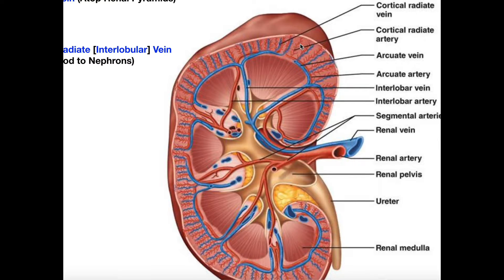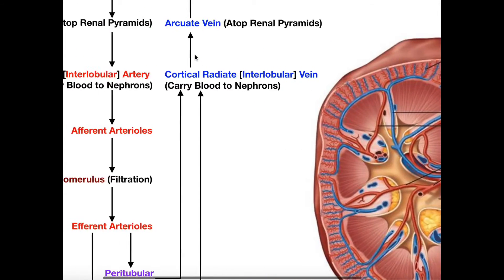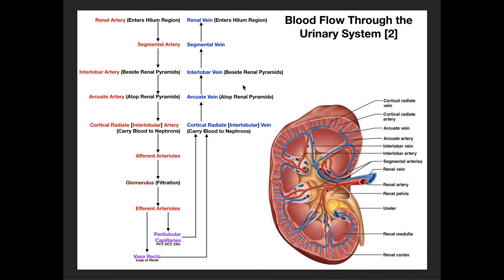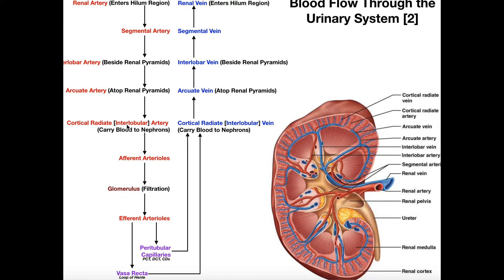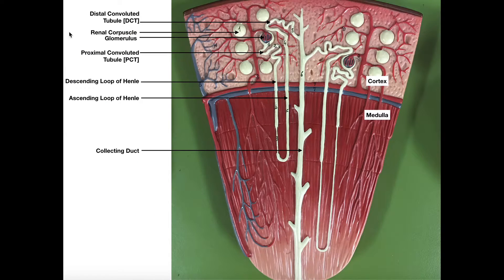Another term you'll see for these is interlobular arteries — not interlobar, but interlobular. So we have cortical radiate or interlobular arteries. Looking at this picture, this is actually an interlobular artery right here. This one that goes across the top of the renal pyramid is the arcuate artery. We can see that it separates the cortex from the medulla of the kidney, and the arcuate artery feeds into the interlobular artery.